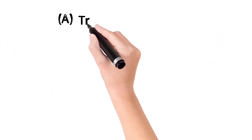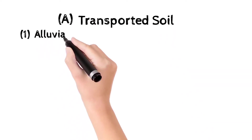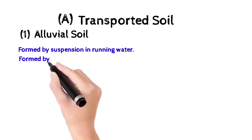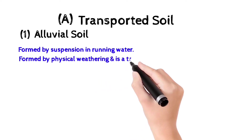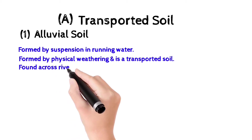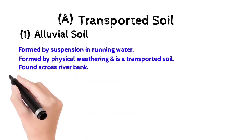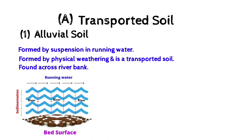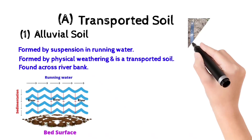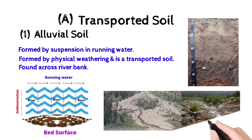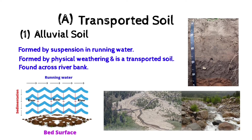The first type of transported soil is alluvial soil. Alluvial soil is formed by suspension in running water. It is formed by physical weathering and is found across river banks. The flooded running water carries soil particles, and due to settlement of particles, the soil particles will be deposited at the bare surface of the river.